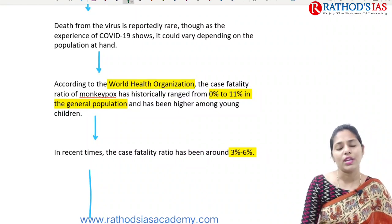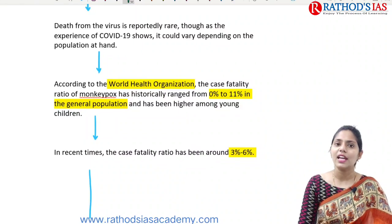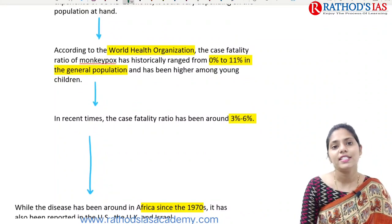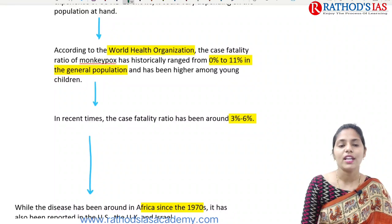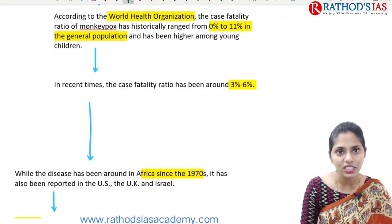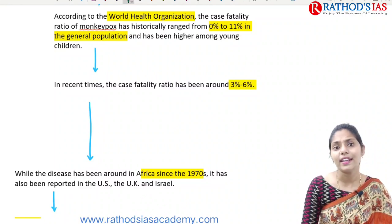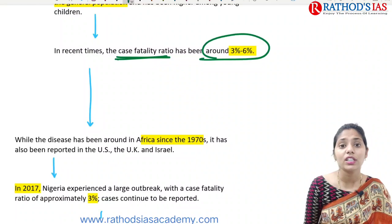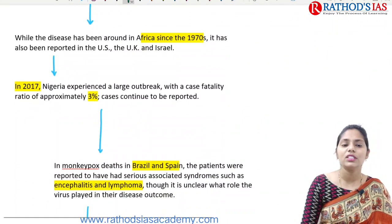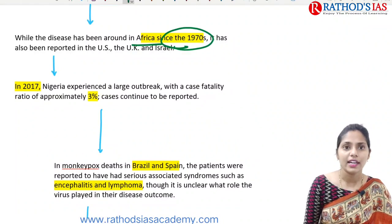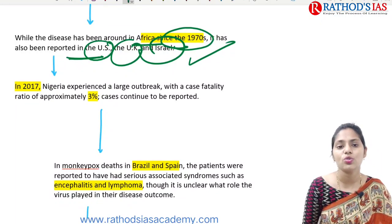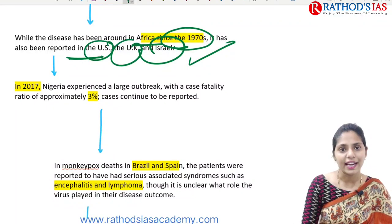According to the World Health Organization, the case fatality ratio of monkeypox is 0 to 11% in the general population. In recent days, the case fatality ratio has been around 3 to 6%. The disease has been around in Africa since 1970 and has been reported in the US, UK, and Israel. In 2017, Nigeria experienced a large outbreak with a fatality rate of just 3%.